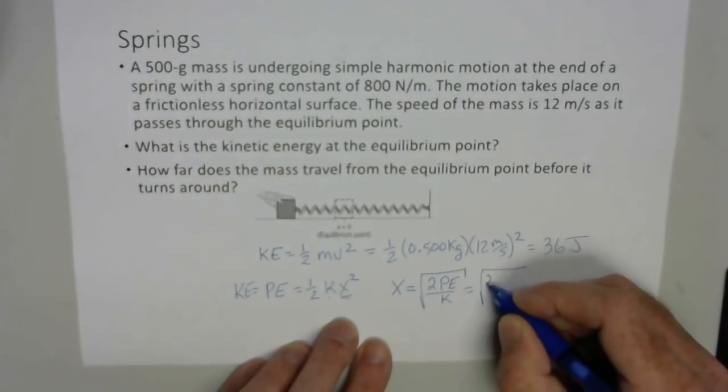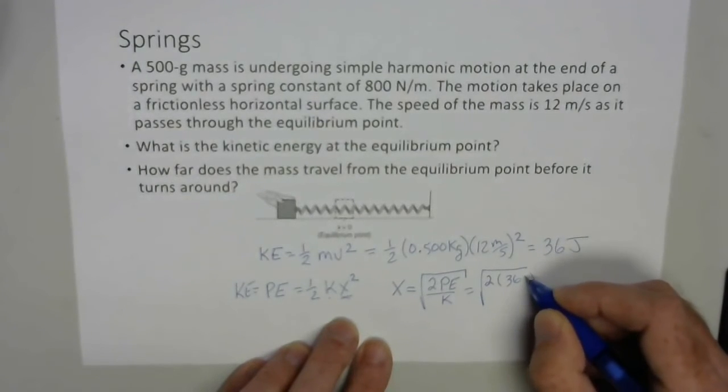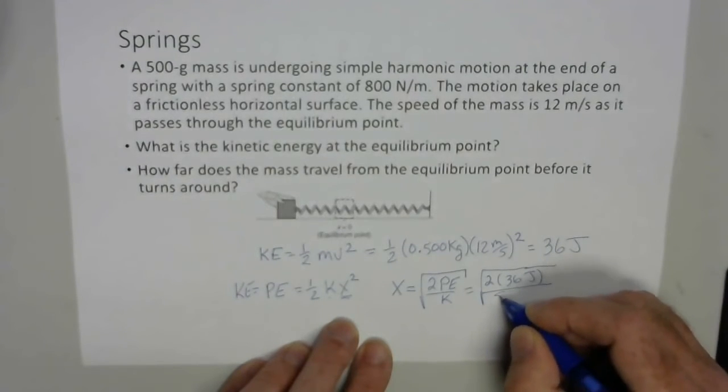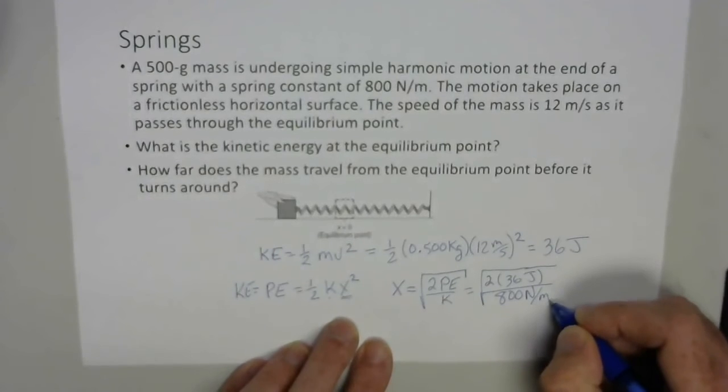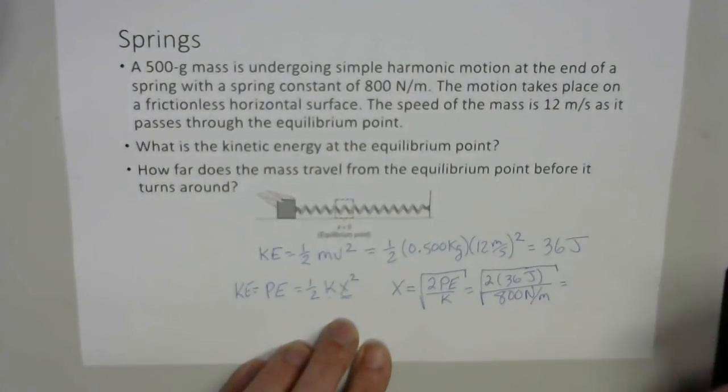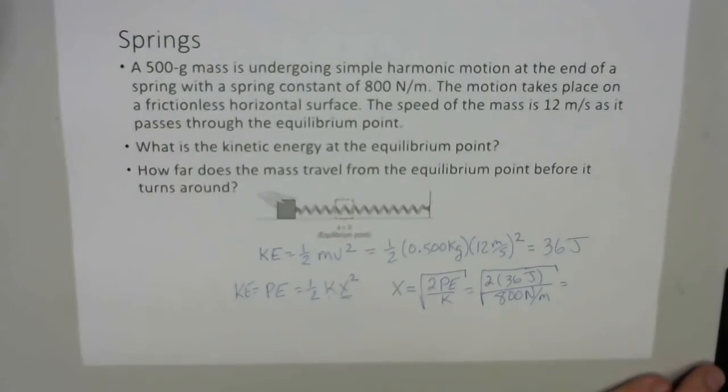So we get 2 times 36 joules divided by 800 newtons per meter. So then we're going to say 2 times 36 divided by 800, and then we're going to square root that whole thing.